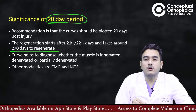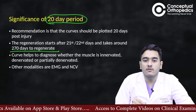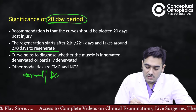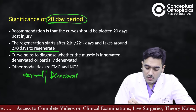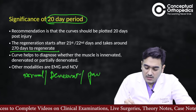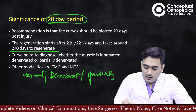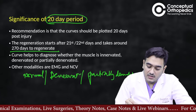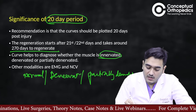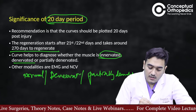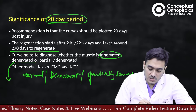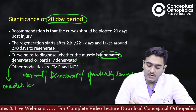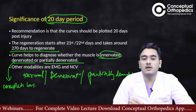Once regeneration starts, that is when you get the true picture of what you are dealing with — whether the muscle is normal, denervated (complete loss of connection), or partially denervated (partial loss of connection). The curve helps to diagnose these three conditions.